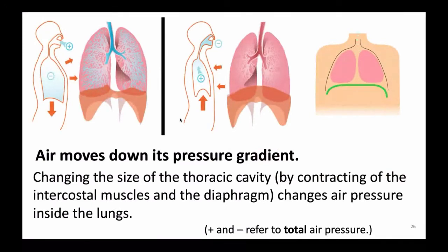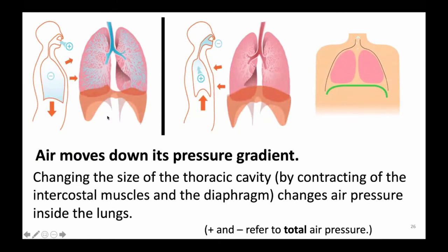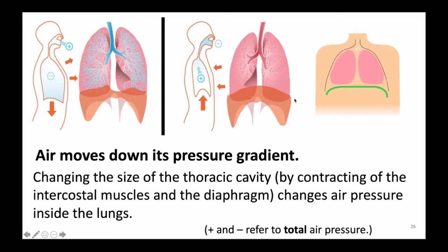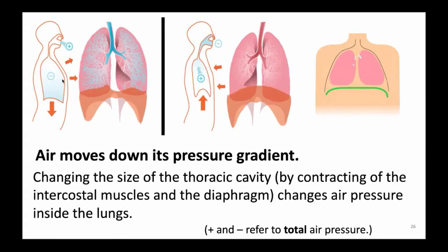This little animation on the right is showing you that change in size of the thoracic cavity and the accompanying movement of atmosphere shown by the little blue bubbles. On the left is a lateral view of inhalation — the diaphragm more flat compared to the center panel where it's more dome-shaped. The plus and minus in these images refer to differences in total air pressure, not partial air pressure. Ventilation is about total atmospheric pressure.